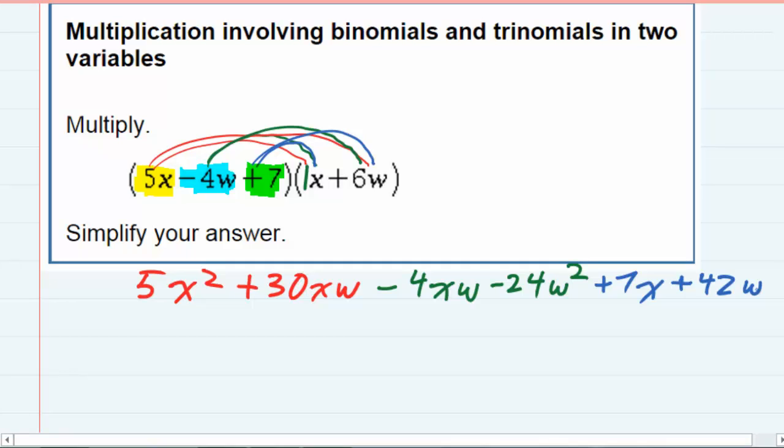We've done the multiplication, but we definitely need to simplify things. I'm looking for like terms that I can combine together. The first term is 5x squared. That's the only x squared term I have, so I'm going to leave it alone and just bring it down.